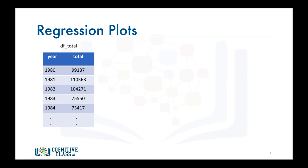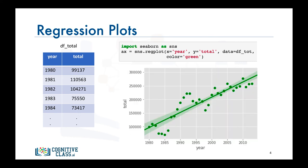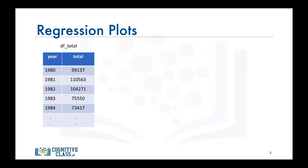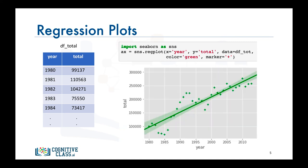Seaborn's regplot function also accepts additional parameters for any personal customization. So you can change the color, for example, using the color parameter. Let's go ahead and change the color to green. Also you can change the marker shape as well using the marker parameter. Let's go ahead and change the shape of our markers to a plus marker instead of the default circular marker.